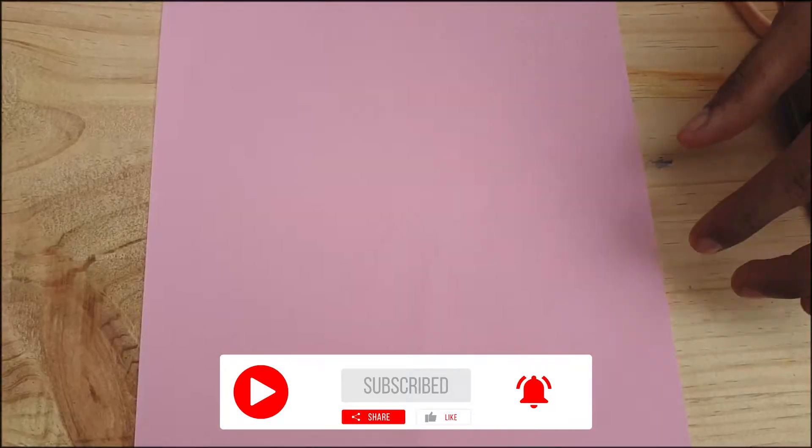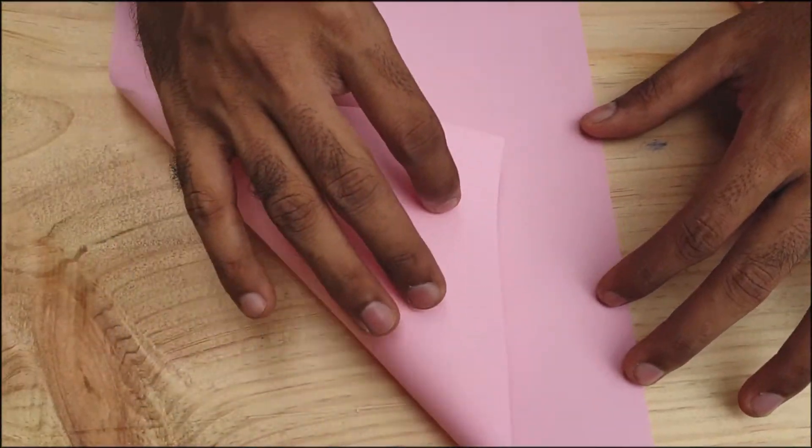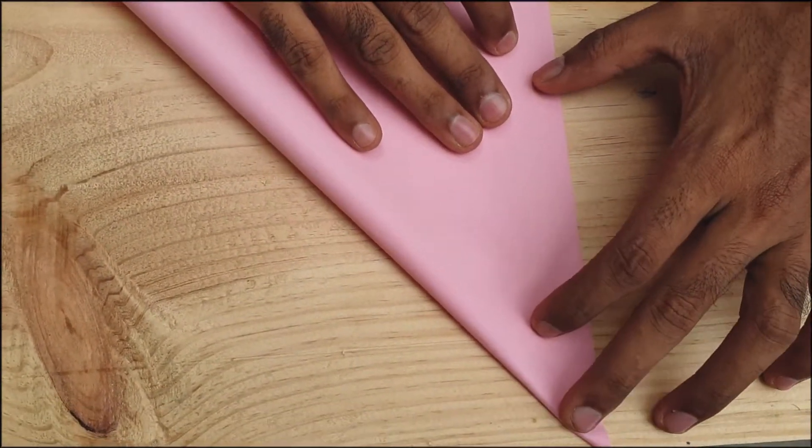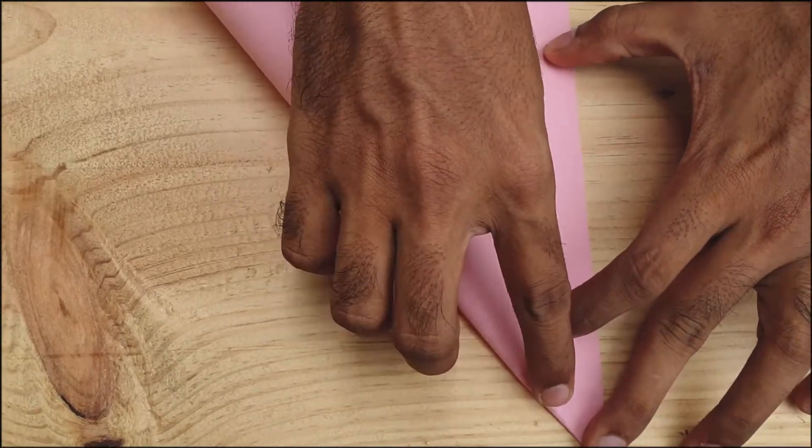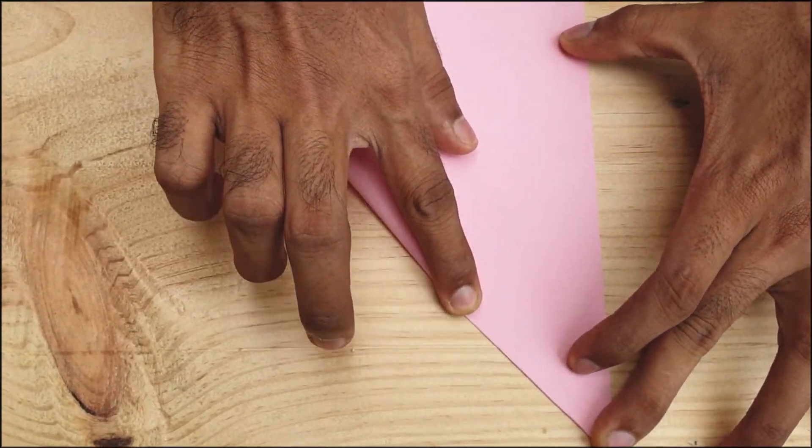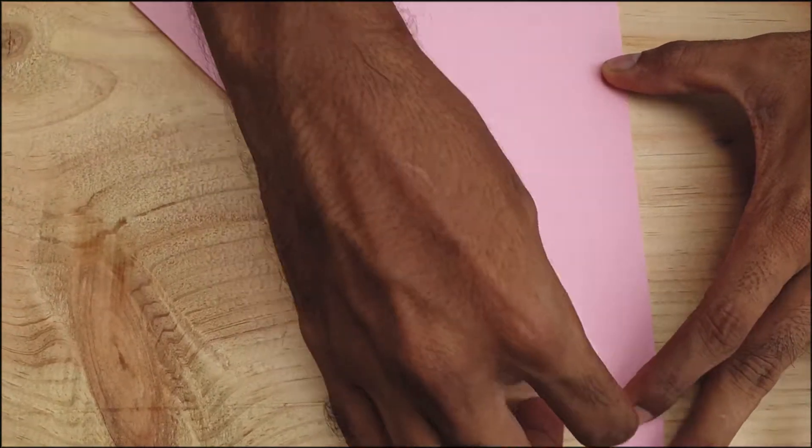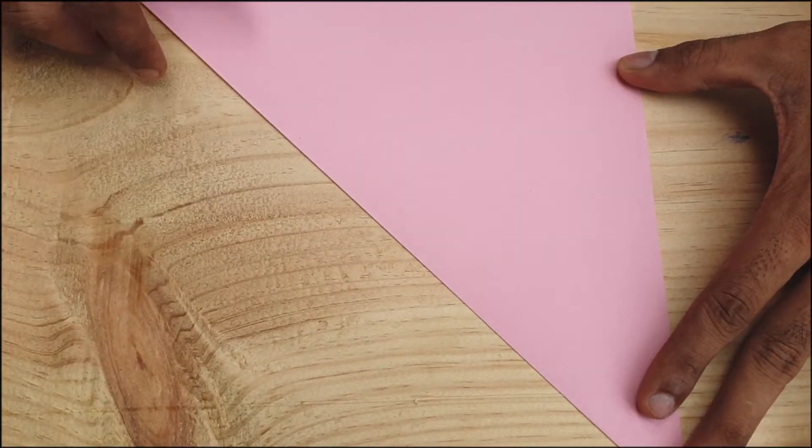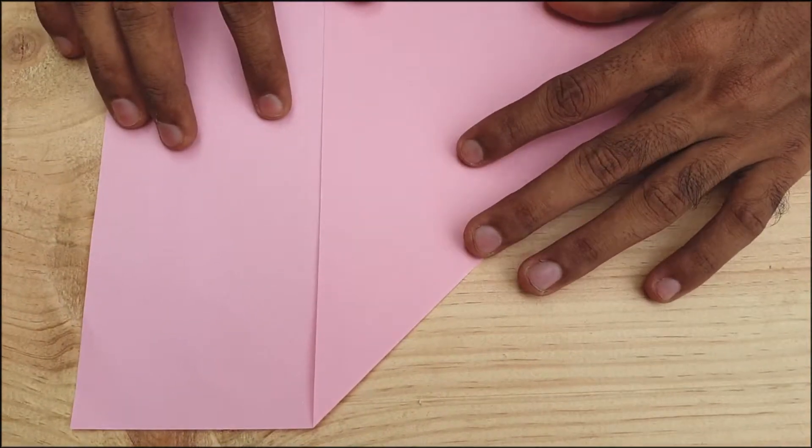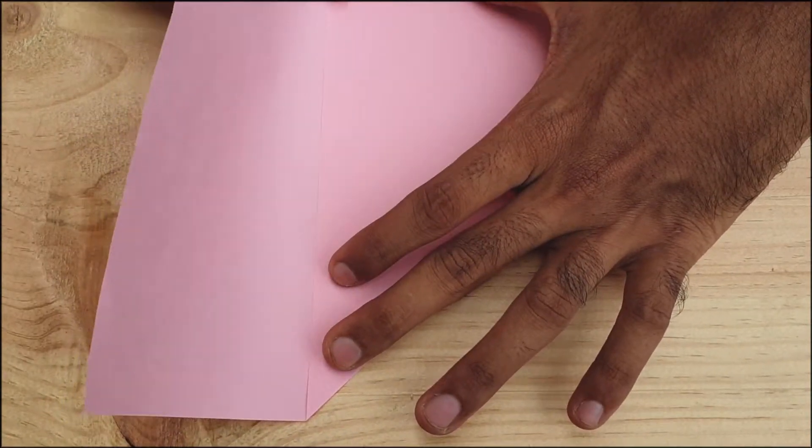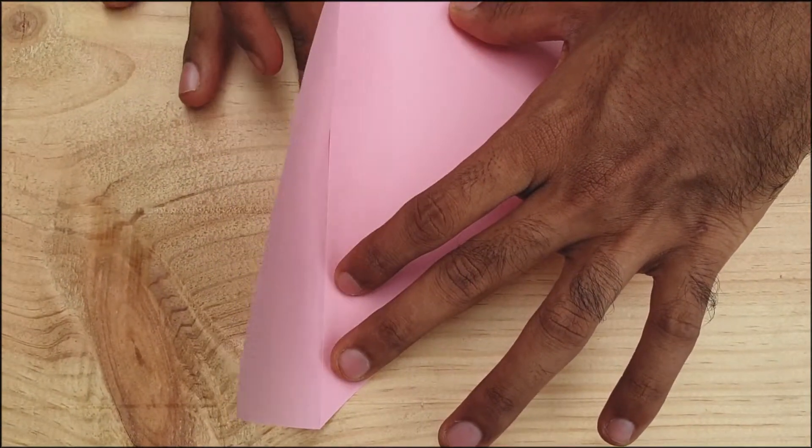You can take a sheet of color paper. You can choose any desired color on your own. Fold it on one side, and we're going to make that paper into a square shape, so I'm going to tear the unnecessary areas.